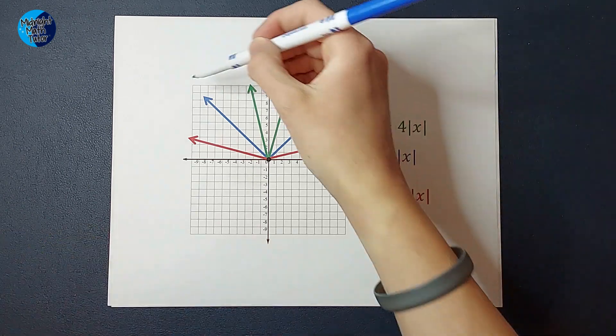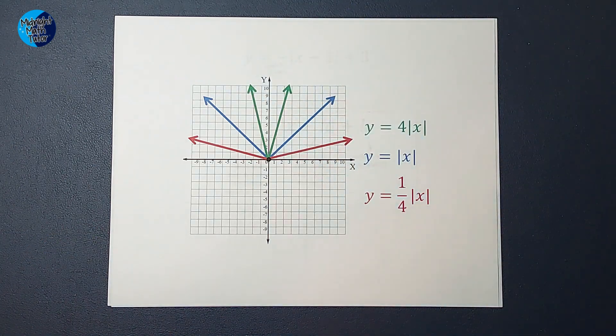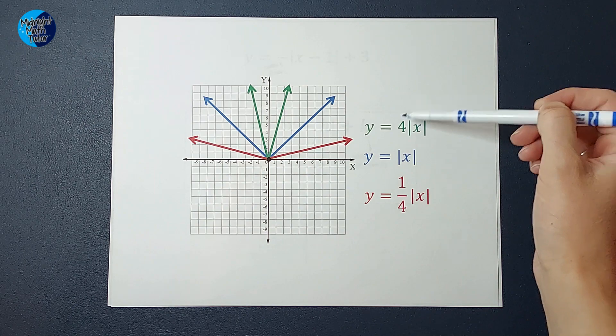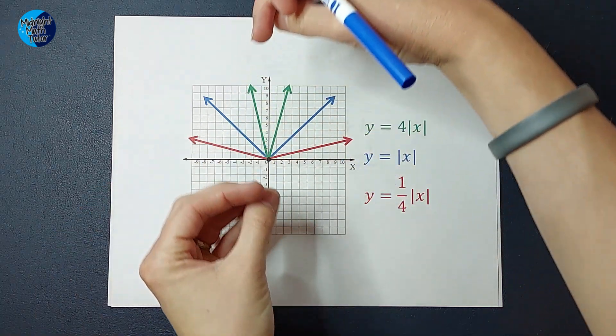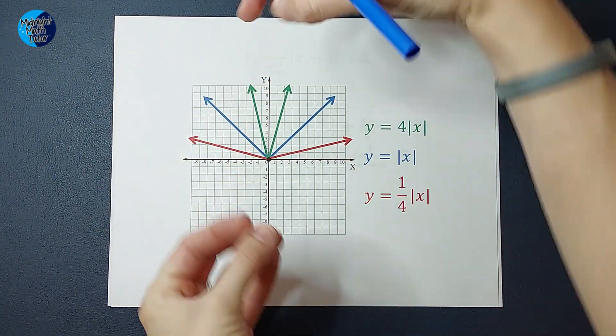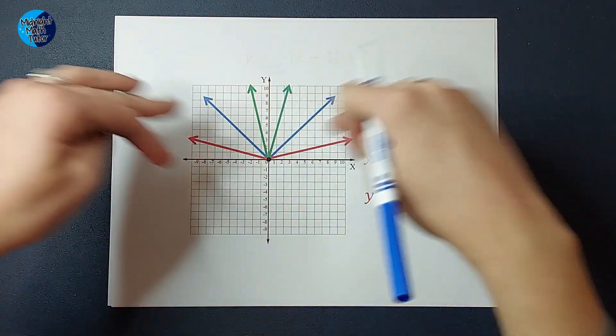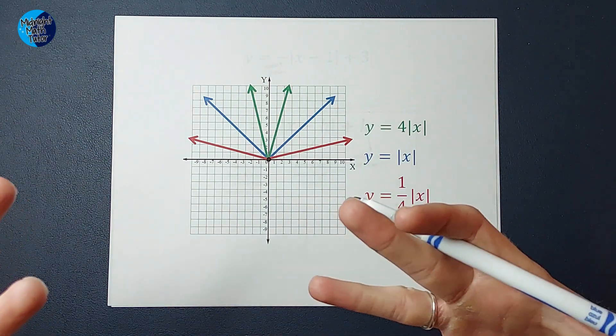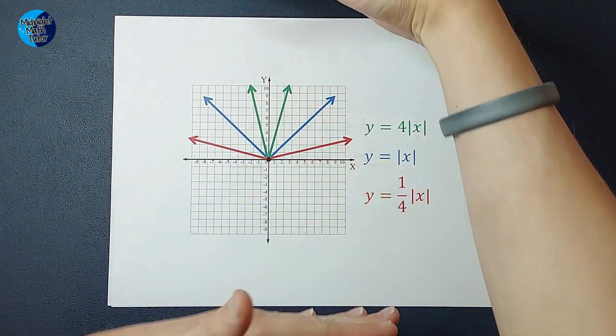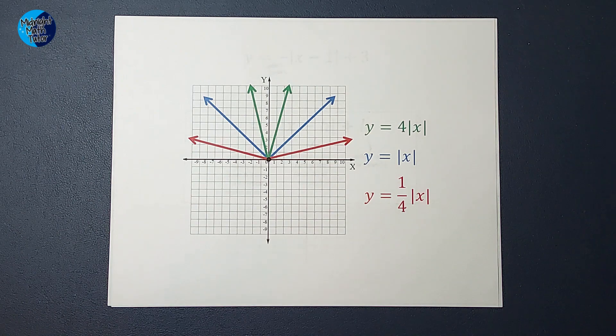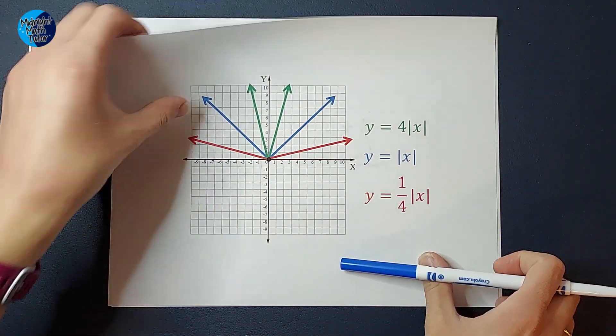But you'll see the blue is that parent graph I showed you earlier. The green has a four out front and you see how it's still a V, but it's stretched, right, it's a lot skinnier. Same with the red has a fraction out front and it's still a V. It's looking less like a V, but it's still a V, right, but it is compressed. So that's how a number out front can affect it.